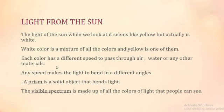Each color has a different speed to pass through air, water, or any other material. Did you see the rainbow? When it's raining a little bit and the Sun comes up, we're going to see a colorful half circle in the sky, which is called a rainbow. It consists of almost all the colors. So how is the rainbow made?